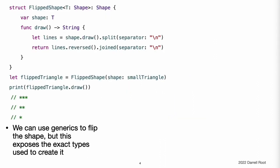You could use generics to implement operations like flipping a shape vertically, as shown in this code. However, there is an important limitation to this approach. The flipped result exposes the exact generic types that were used to create it.